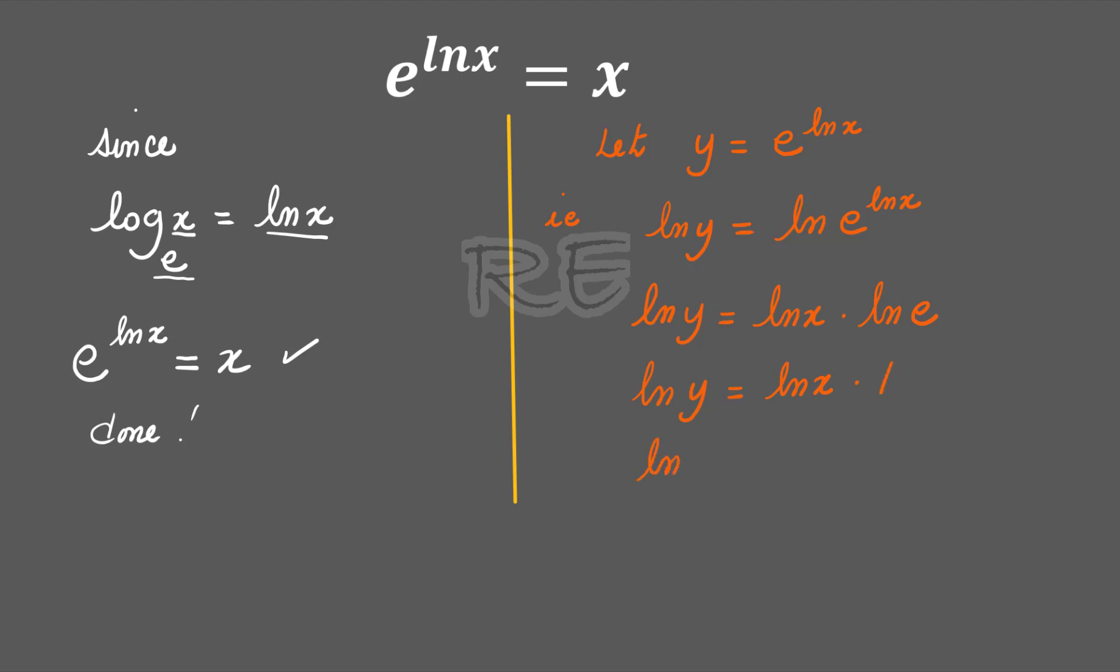Now ln y is equal to ln x by the equality property, therefore y must be equal to x by the equality property of logarithms. And y was defined as e to the ln x, therefore x is equal to e to the ln x.